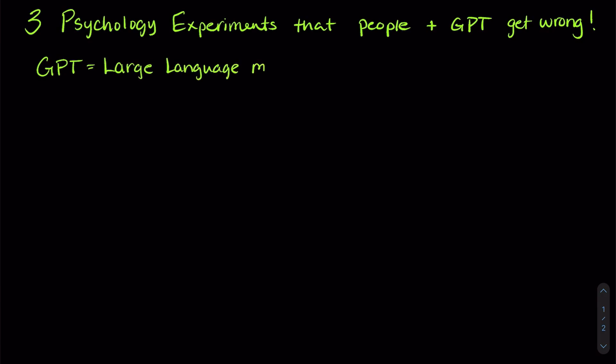Hey there, today we're going to be talking about three psychology experiments that people and GPT get wrong. Now GPT is what we call a large language model, and it's models like these that power things like ChatGPT, which you guys are probably familiar with at this point. These models can do some really cool stuff.